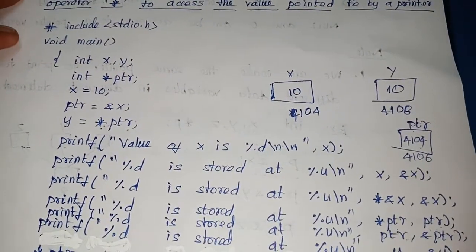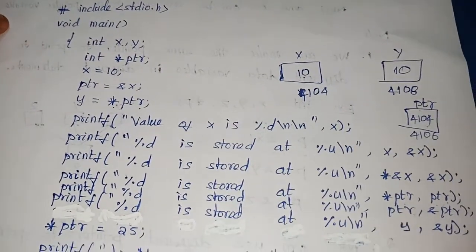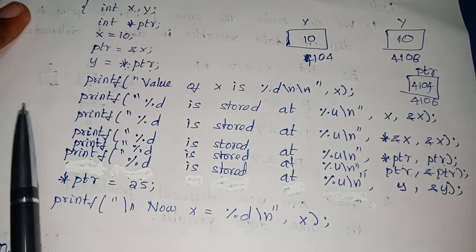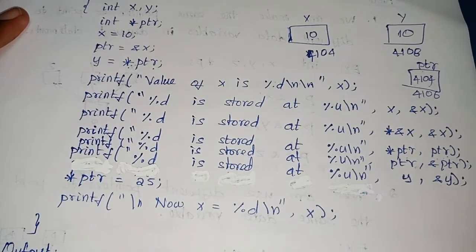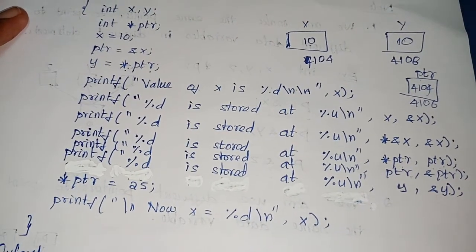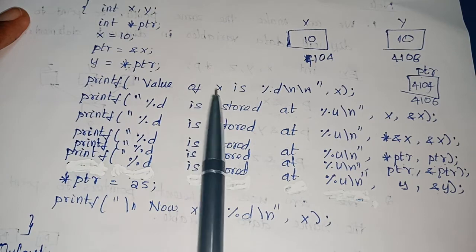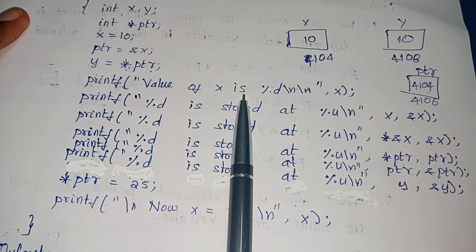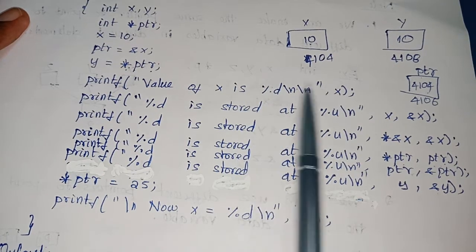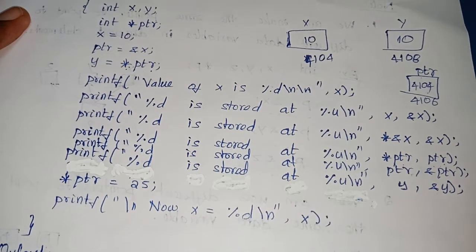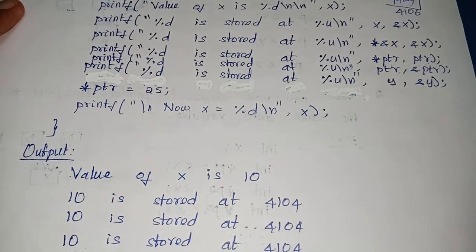Now let us see what will be printed — the address of x, y, everything. The first printf: 'value of x is %d' with argument x. What is x? 10. So the output will be: value of x is 10.